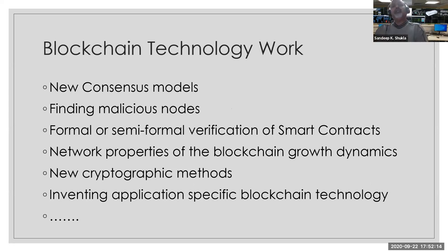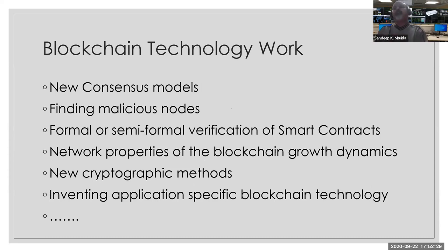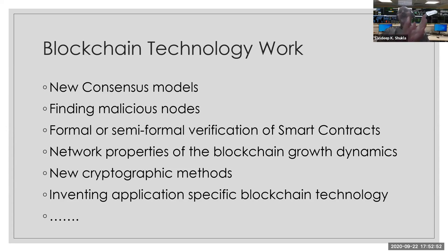The other kind of work we often do is blockchain technology work itself — like new consensus models, finding malicious nodes in permissionless blockchains like Ethereum or Bitcoin, formal or semi-formal verification of smart contracts, network properties of blockchain growth dynamics, new cryptographic methods, or inventing application-specific blockchain technology like IOTA or Coda. These are a different kind of problem in the technology domain itself. However, these papers are fewer in number than the application-type papers I was talking about earlier.